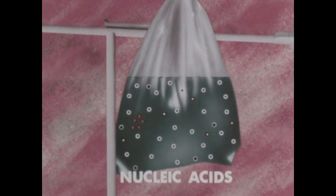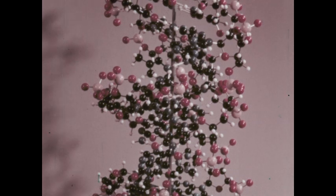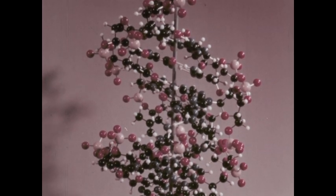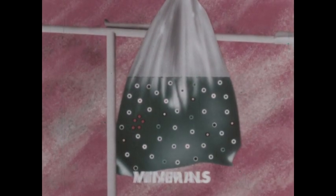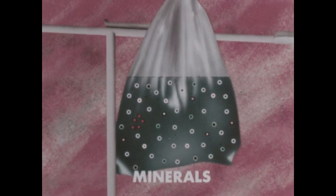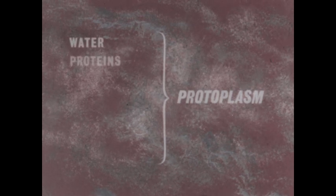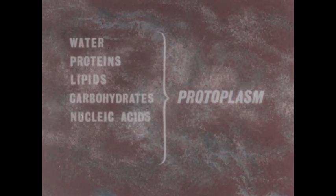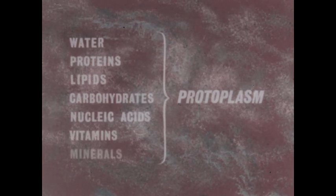A fourth group of compounds in protoplasm is the nucleic acids. The nucleic acids are among the largest molecules found in protoplasm and, as this model indicates, are made up of hundreds of atoms. In addition, molecules of vitamins and minerals are dispersed in protoplasm. So protoplasm consists of molecules of water, proteins, lipids, carbohydrates, nucleic acids, vitamins, and minerals.